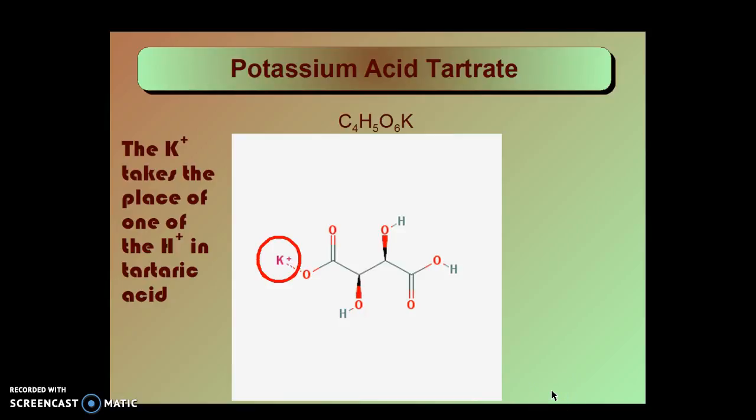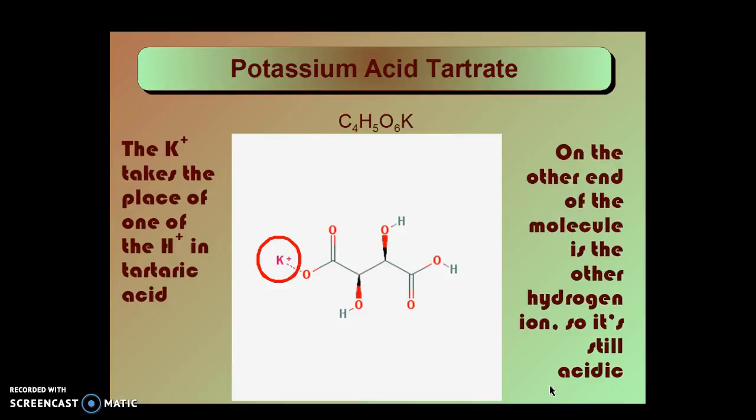If we substitute a potassium ion for one of those hydrogen ions we get potassium acid tartrate. On the other end of the molecule you find the other hydrogen ion so potassium acid tartrate is still acidic.